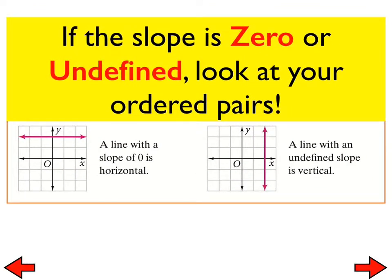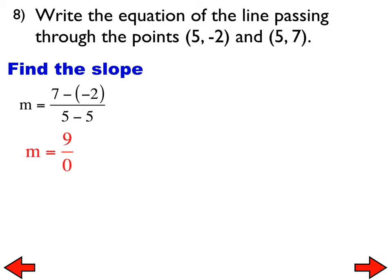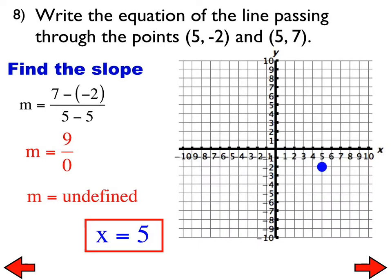If the slope is zero or undefined, look at your ordered pairs. Number 8: the slope is undefined. Look at the ordered pairs — 5, negative 2 and 5, 7. Both have x equals 5 in common. If you plot those, the equation is x equals 5 — a vertical line.